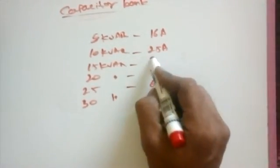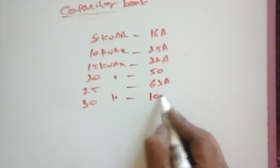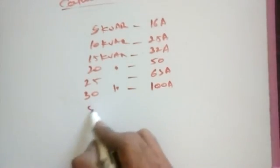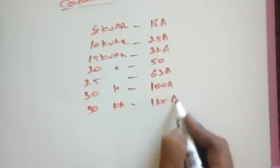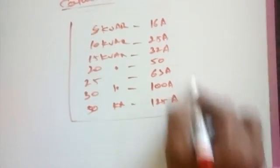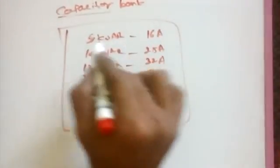In here we choose 32 ampere, in here we choose 100 ampere fuse. In 50 kVR we choose 125 ampere. This is how we choose fuse link and contactor. If in case we use for 5 kVR...